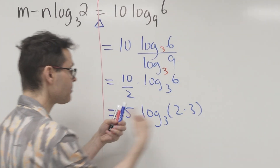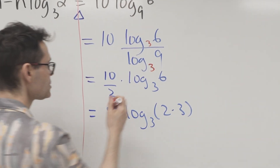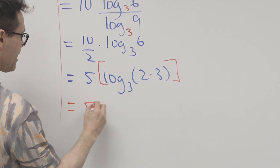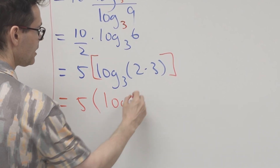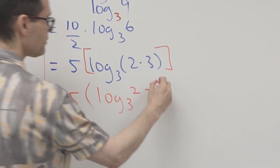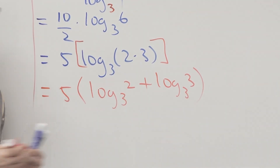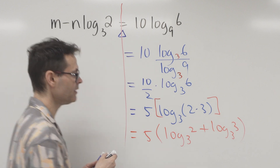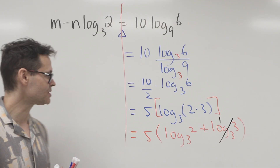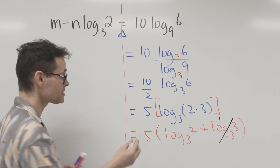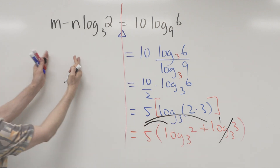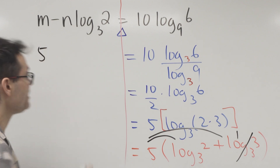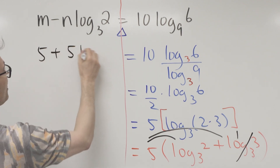I can pull those apart because I've got two terms on one side and only one term on the other. Using the product law: 5 times bracket log of 2 base 3 plus log of 3 base 3. That's nice because log of 3 base 3 is 1 — the log of anything in its own base is 1. Bringing the 5 through: 5 times 1 is 5, and 5 times log of 2 base 3 gives 5 log of 2 base 3.